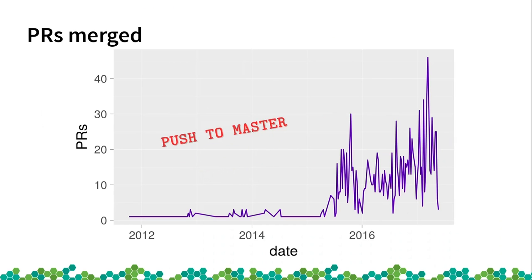It was push to master basically. Since more or less two years ago, at least in the frontend team, we started working with pull requests. Although the backend still keeps working without them, that's why at the beginning you see no pull requests at all — they just pushed to master.